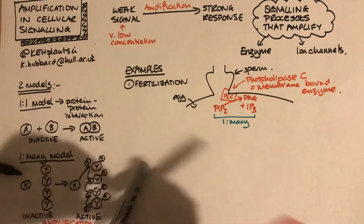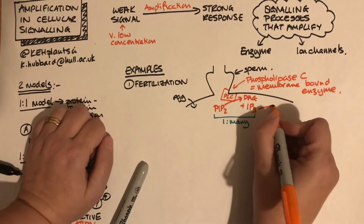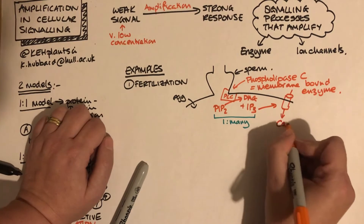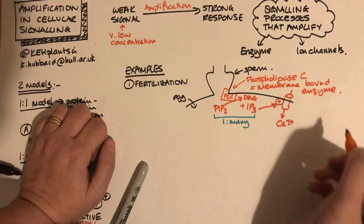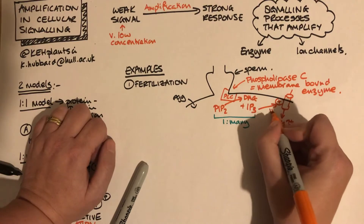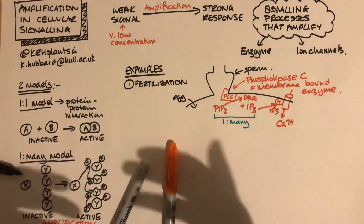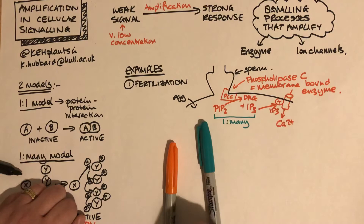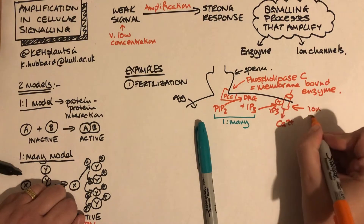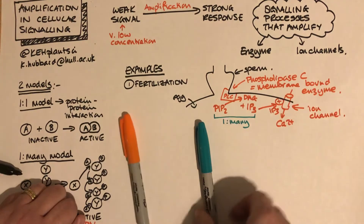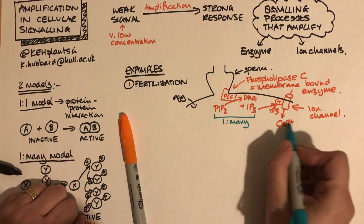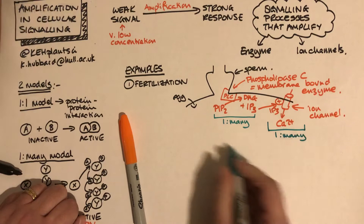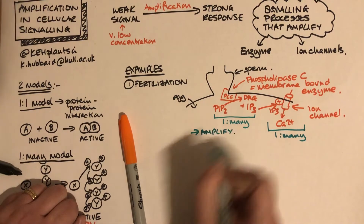There's another point of amplification in this pathway, because what IP3 does is activate an influx of calcium. Again, we have a one-to-many situation: one molecule of IP3 binds to one ion channel transporter, which allows 10,000 calcium ions through. So both steps — phospholipase C producing IP3, and IP3 opening calcium channels — amplify the system.